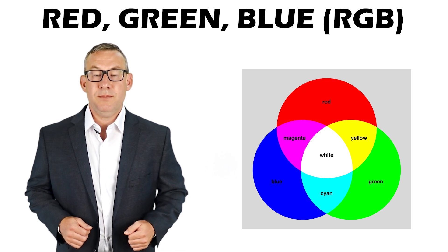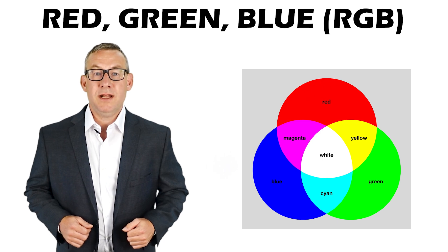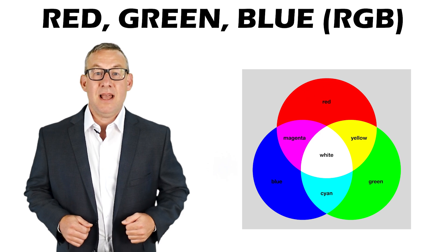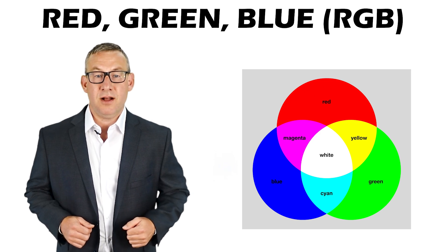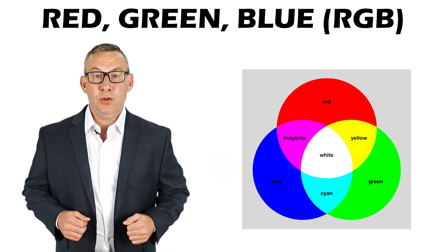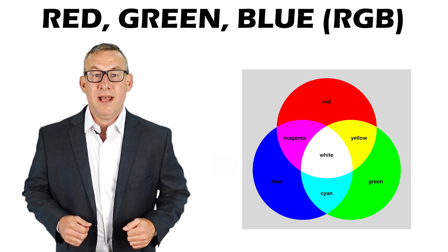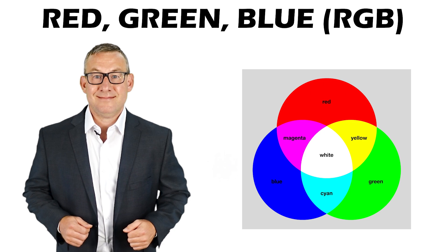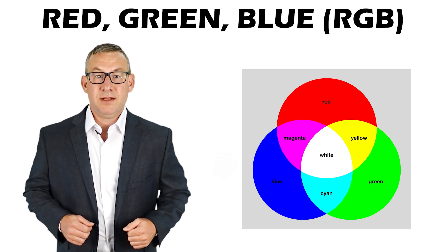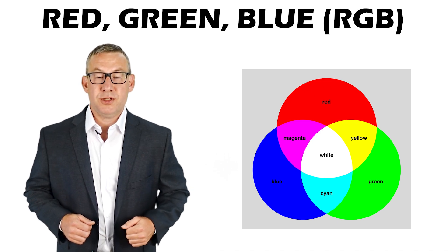Red, green, and blue is the additive color system. The zero of each color creates black, and the max value of 255 of each color creates white. The combination of two primary colors creates a subtractive color: red and blue combine to create magenta, blue and green combine to create cyan, and green and red combine to create yellow. The additive system is how color is produced on computer screens.